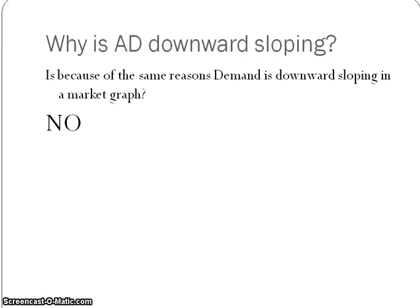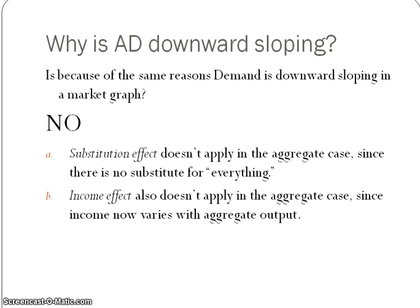Remember that the aggregate demand curve is not downward sloping because of the income and substitution effect, like we would say for the regular demand curve. The one to watch out for is the income effect, because that's the one you may confuse as you're describing the aggregate demand curve, so be careful of that one.